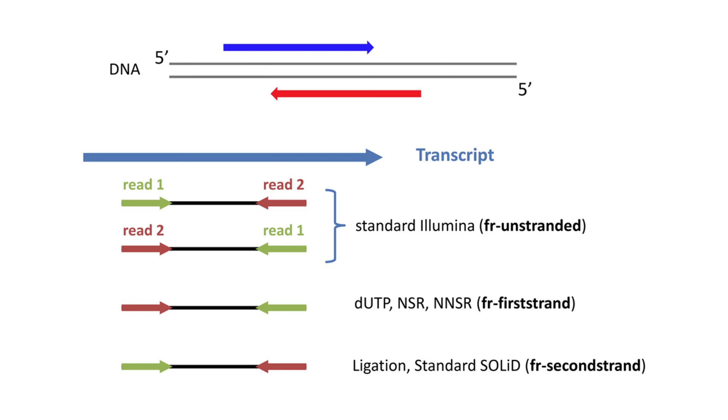In the dUTP labeling method adopted by the Illumina strand-specific kit, the second read is in the same direction of that of the transcript, while the first read is in the opposite.